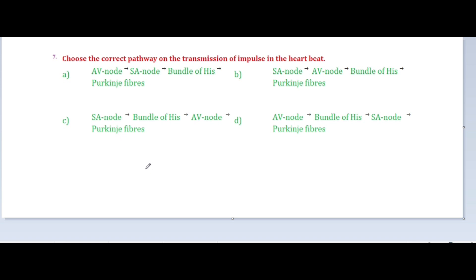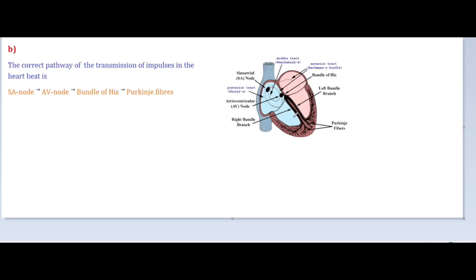The SA node — sino-atrial node — can start the action potential which causes the contraction of the atrium. Looking at the position of these nodes: the SA node is located in the upper right corner of the right atrium. The AV node — atrio-ventricular node — is also in the right atrium, at the lower left corner near the AV septum.